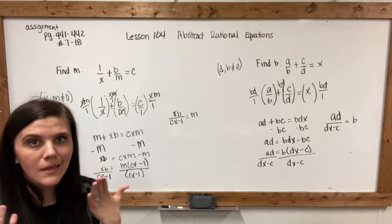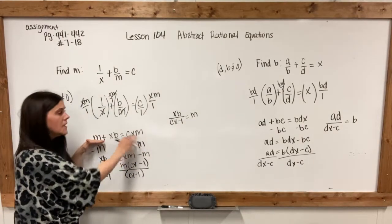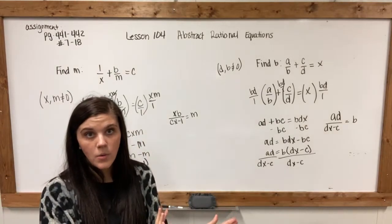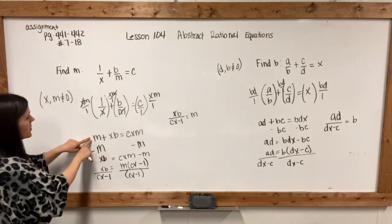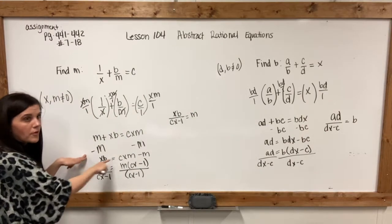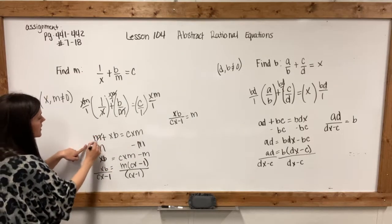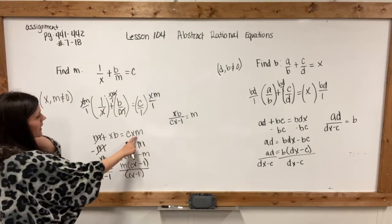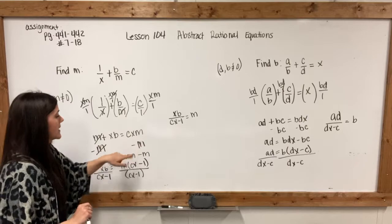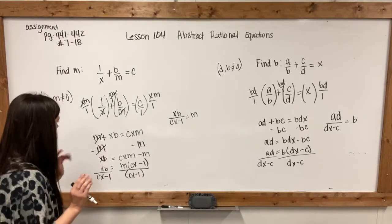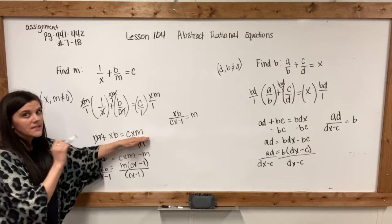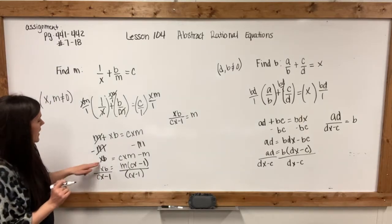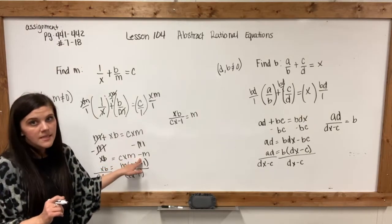You can't really isolate m when there's an m on both sides of the equation. So I first want to move this m over to get my m's on the same side. It is a positive m, so we are going to subtract m from both sides. m minus m cancels out, and cxm minus m will be on this side. So now I've got xb = cxm - m.